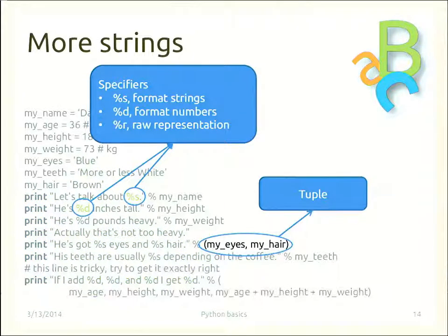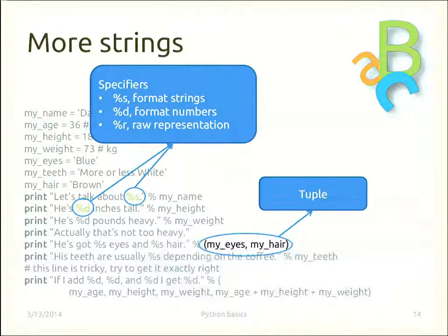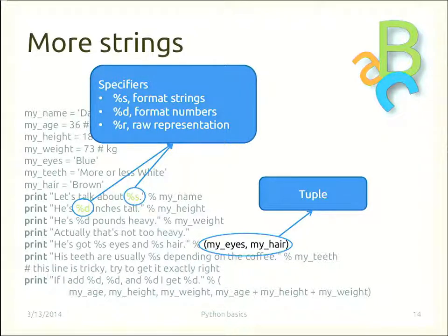To summarize: %s is a format specifier for strings, %d is for formatting integer numbers, %r shows a raw representation of an object, and %f is for floating point numbers. They all act as placeholders for formatting output.